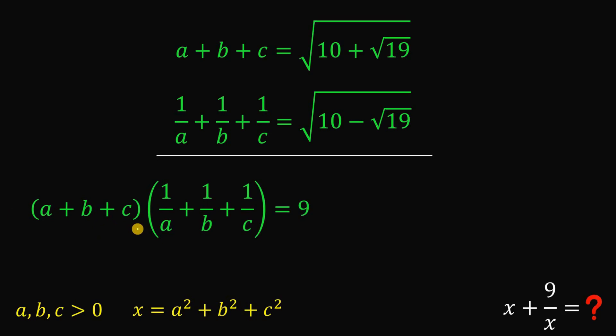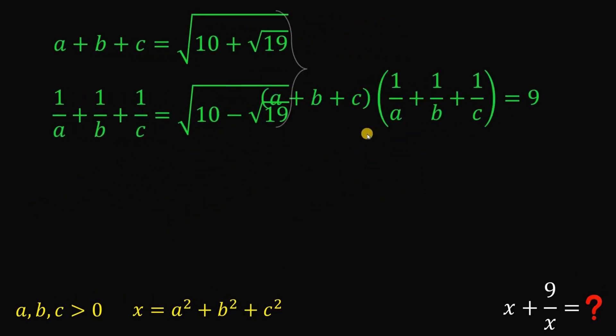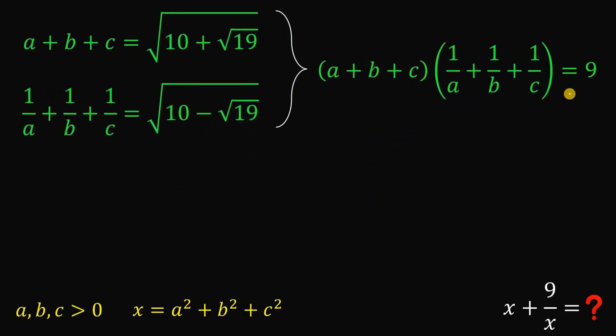And square root of 81 simply equals 9. Since A, B, and C are all greater than 0, the product of these two equations is, of course, a positive number. We now know that the product of these two equations results in 9.